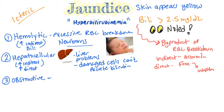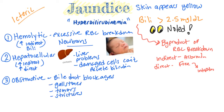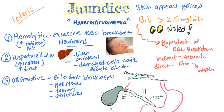The last one is obstructive jaundice. This occurs when there are obstructions in the bile ducts, such as gallstones or gallbladder stones, or there are strictures or tumors within the gallbladder or gallbladder ducts. Therefore, the bilirubin cannot leave the gallbladder through the bile ducts because there is an obstruction in the way. And that creates an increased direct bilirubin.